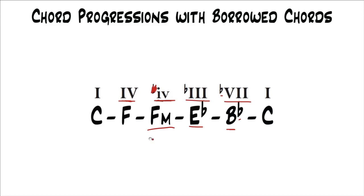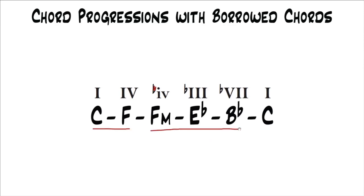That's how it would be written out. Don't worry too much about that. All you have to think about is that we've started in the key of C, borrowed chords from the key of C minor, and then went back to C. Just try these out — try these chord progressions. You're going to see that it has a really cool sound, and you'll even come across times where you've heard this before. A lot of bands do stuff like this.